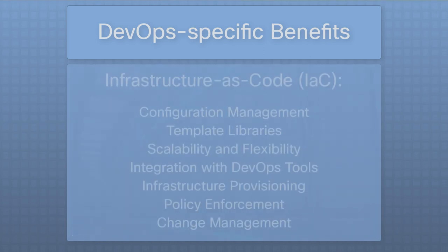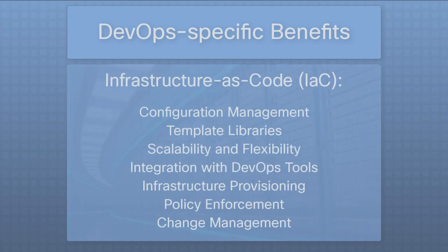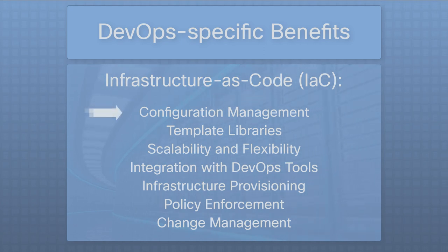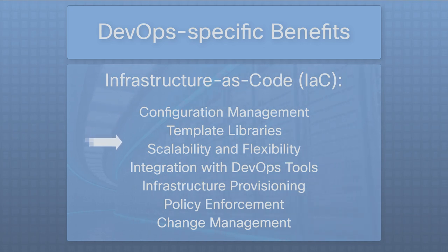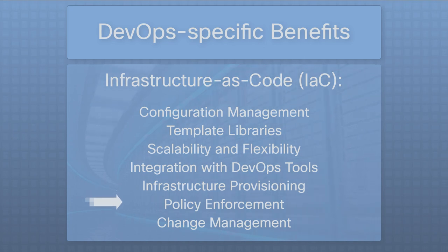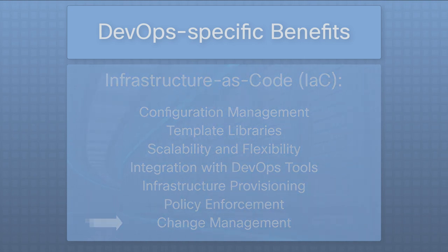Infrastructure as code empowers organizational efficiency. The IaC features of AppDynamics include configuration management, template libraries, scalability and flexibility, integration with DevOps tools, infrastructure provisioning, policy enforcement, and change management.